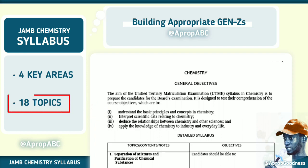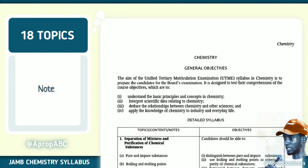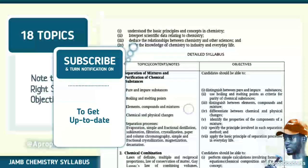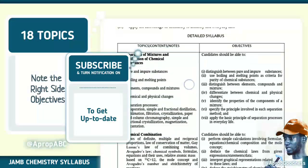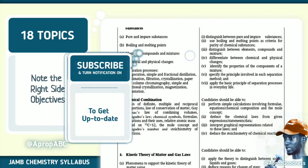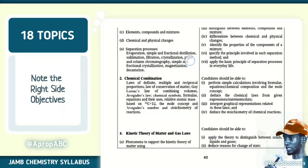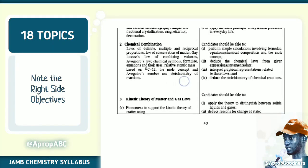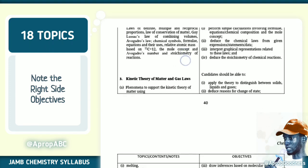Now to the detailed syllabus. We have 18 topics. The first one is separation of mixture and purification of chemical substances — you talk about impure substances, pure boiling point, and all of those things.